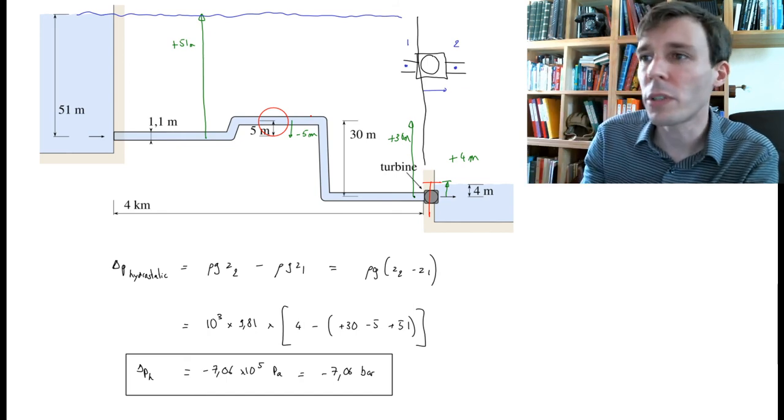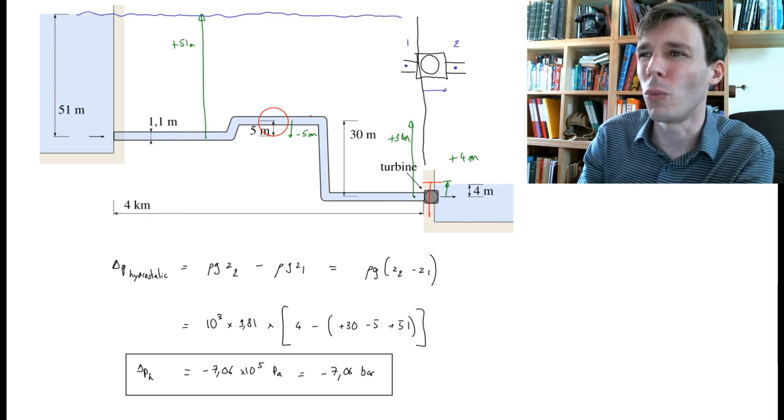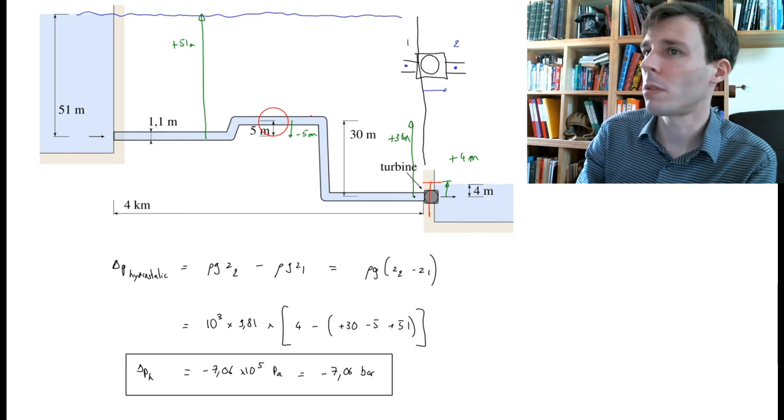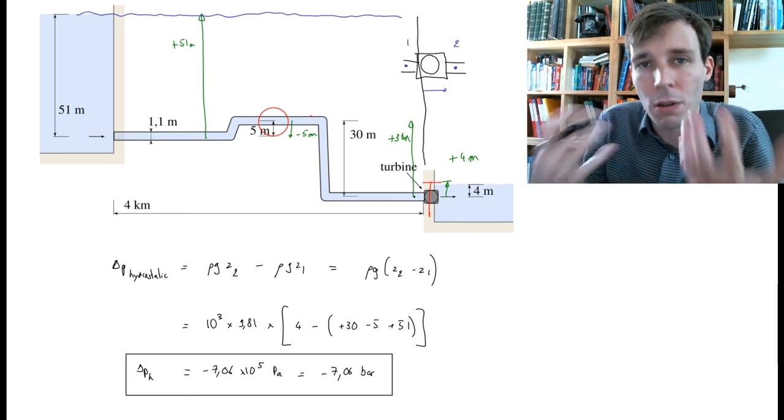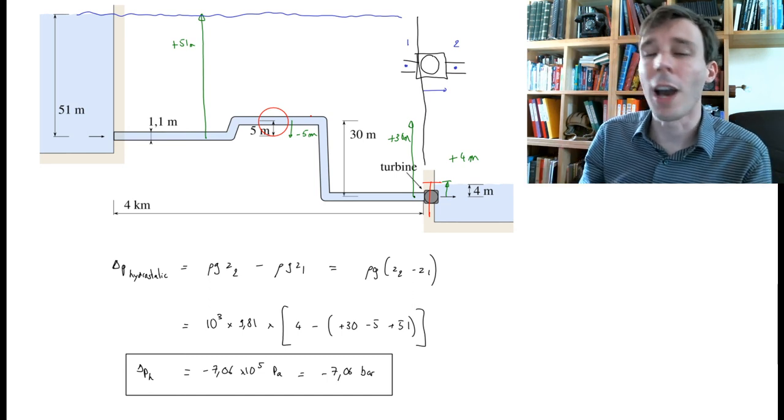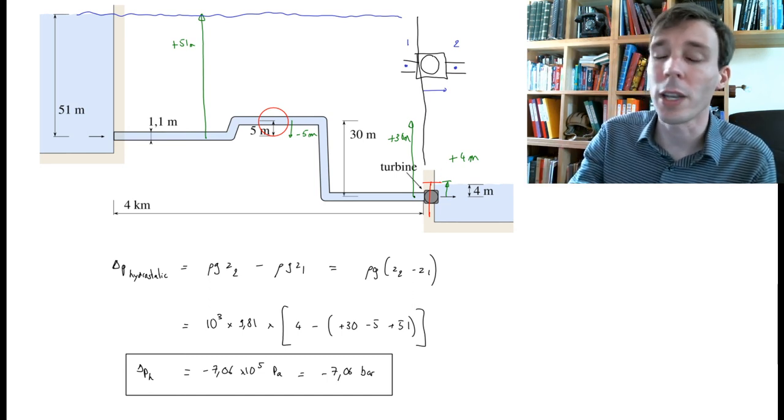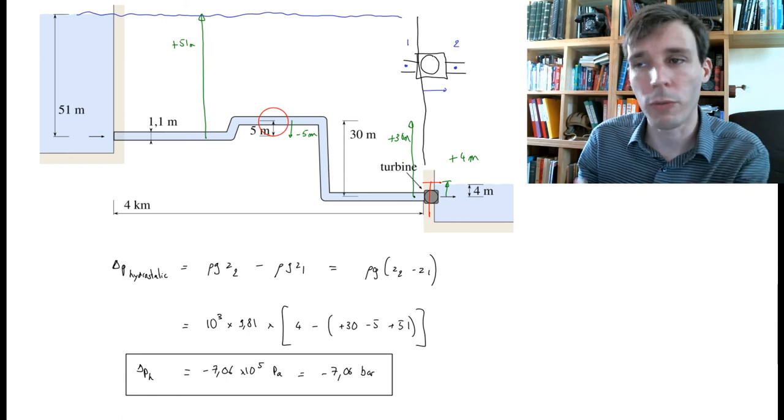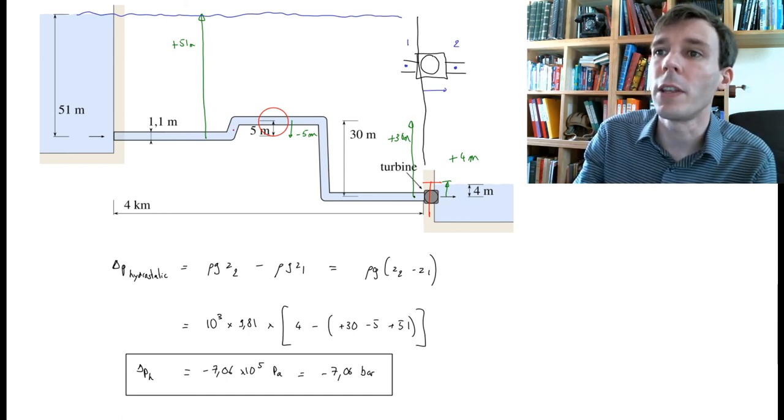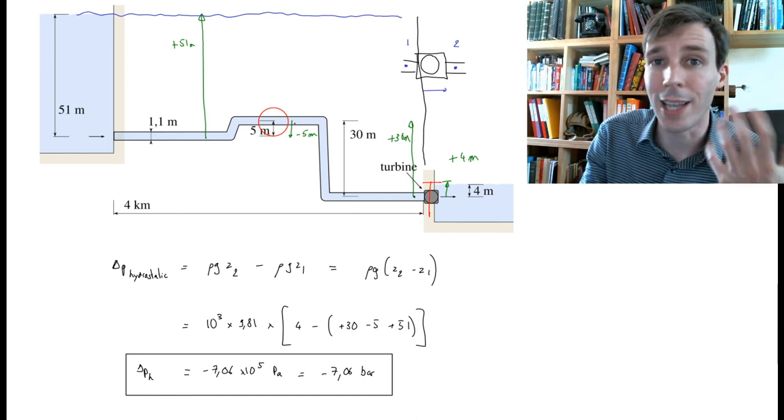The second point to watch out for is that there is no flow. This is the potential available to the turbine. As soon as you open the valve, the water is going to flow, and the pressure through the pipe will not have exactly the same variation.